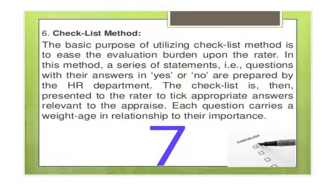Checklist method: The basic purpose of utilizing the checklist method is to ease the evaluation burden upon the rater. In this method, a series of statements — for instance, questions with answers in yes or no — are prepared by the HR department. The checklist is then presented to the rater to take appropriate answers relevant to the appraisee. Each question carries a weightage in relationship to its importance.